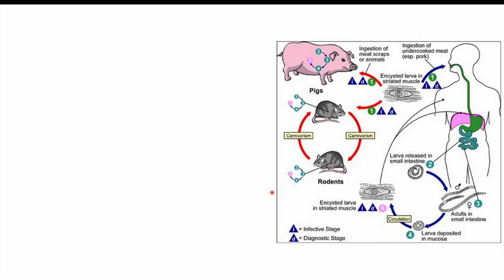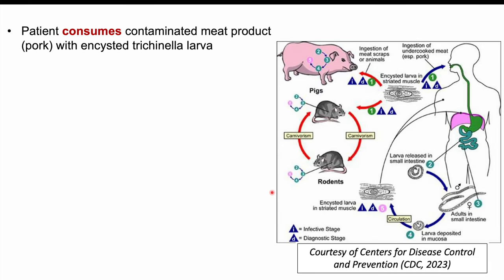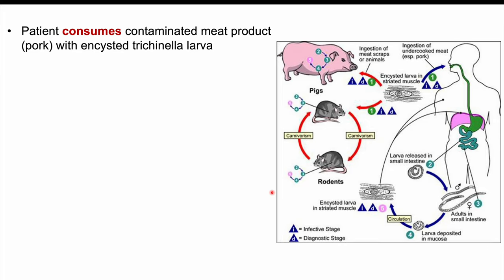Humans are infected with this parasite from consuming contaminated meat products. Most cases are pork-related, but it can come from other animal species as well. It comes from when a patient eats a piece of contaminated meat containing an encysted Trichinella larva.